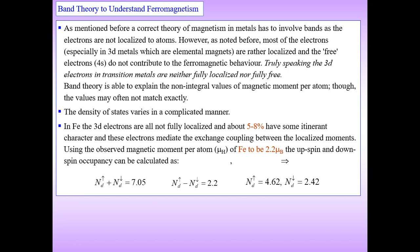The band theory of ferromagnetism must involve the band structure since electrons are not fully localized to atoms. However, as noted, most electrons are rather localized and the free 4s electrons do not contribute much to magnetic behavior. Strictly speaking, 3d electrons in transition metals are neither fully localized nor fully free.